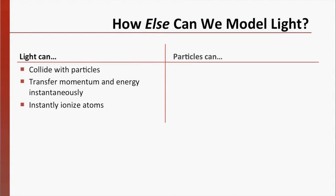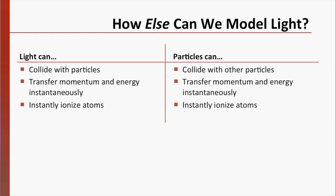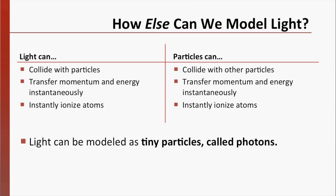The other major model for light is the particle model. Particles can collide with each other, and in the process they transfer momentum and energy almost instantly. Through these collisions, they can quickly knock electrons loose from their atoms. It is because of this that the beam of light can also be modeled as a large number of tiny particles, called photons.